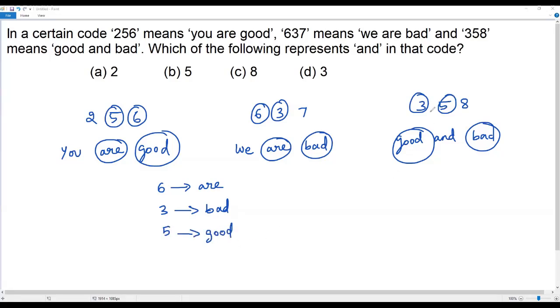So in the last piece of information, in the third information, in code, we have only one left, that is 8. And here we have AND left. So clearly 8 represents and. So which of the following represents and in that code? So and is represented by the code 8. So the correct answer for this question is option C.